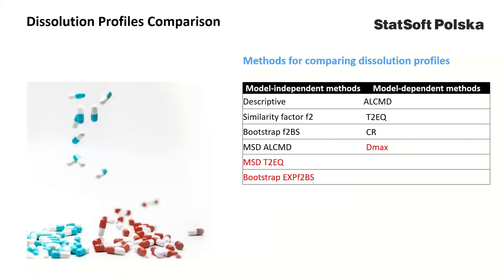The methods used in dissolution profile comparison can be divided into two main categories. The first group includes model-independent methods such as the similarity factor f2 and multivariate statistical distance methods that measure a distance between dissolution results. The second category is model-dependent methods, which are based on fitting a theoretical curve — such as the Weibull curve — to the dissolution results and evaluating the distance between model parameters. However, those methods have some limitations, especially in cases of high variability in dissolution results. We will therefore take a closer look at three new methods that can be used when standard procedures cannot be applied: f2 bootstrap, T² equal, and maximum deviation.